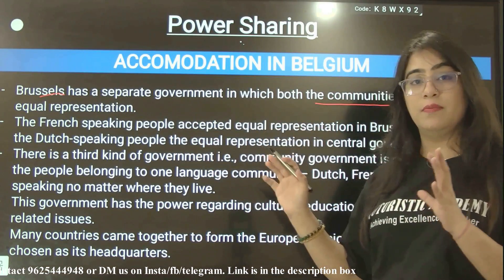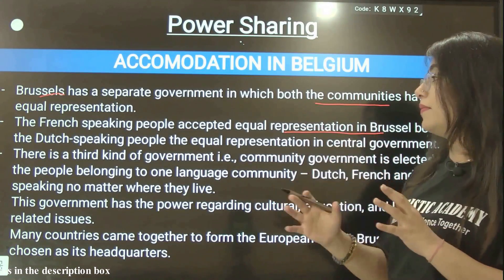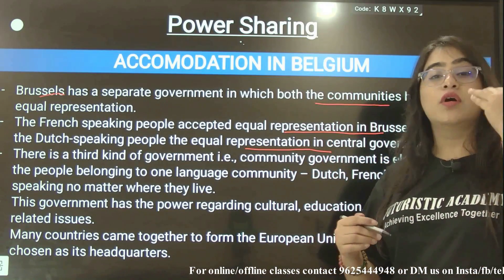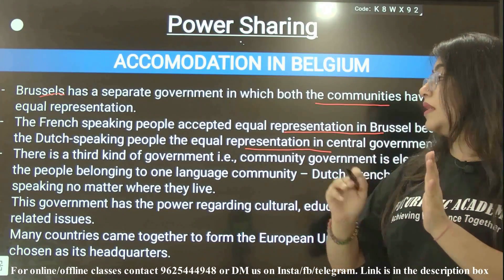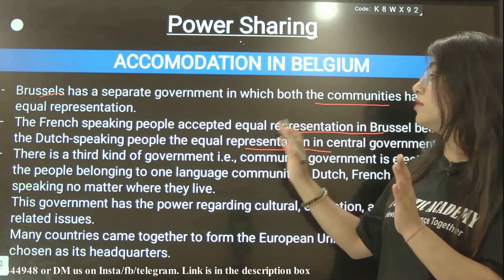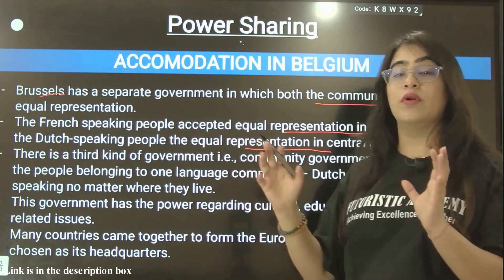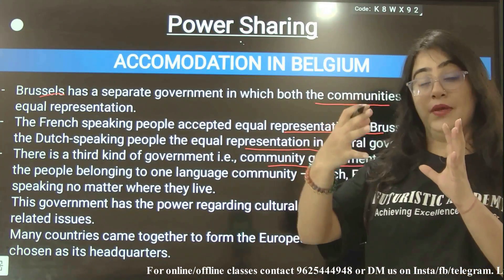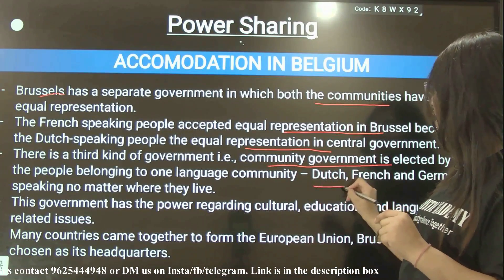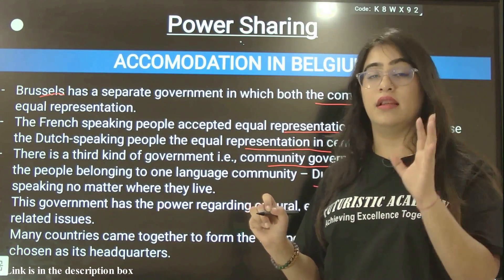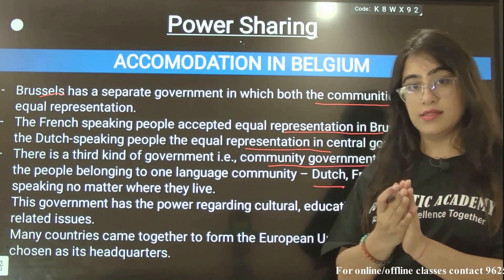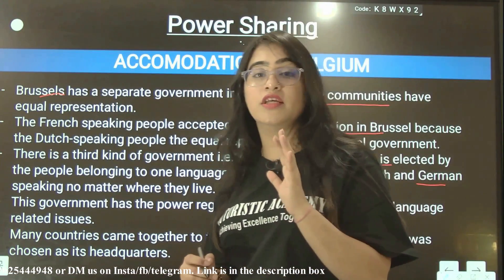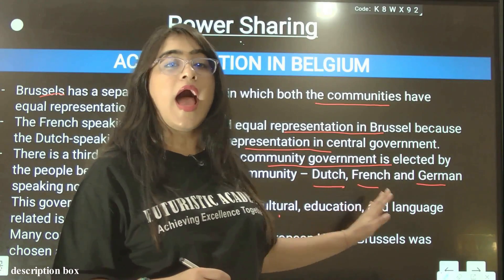French speaking people accepted equal representation in Brussels because Dutch speaking people have equal representation in the central government. Dutch was in the minority at the country level, while French was in the minority in Brussels, so both communities got equal representation. There is also a third kind of government — the community government — which is elected by people belonging to one language community: Dutch, French and German speaking, no matter where they live. This government had powers to handle issues related to education, culture and language.